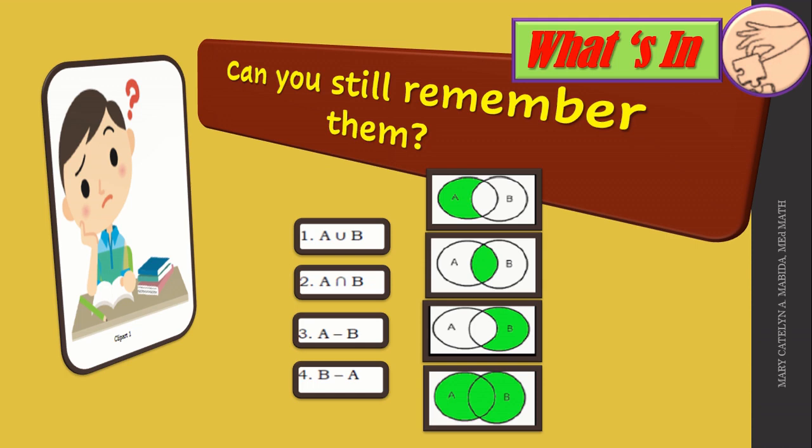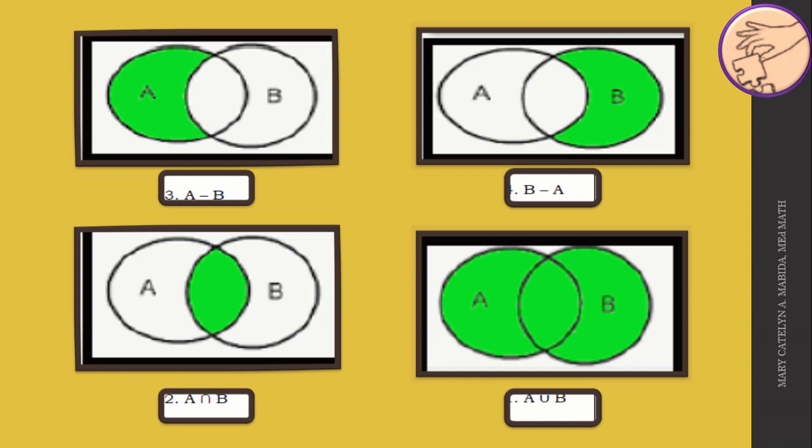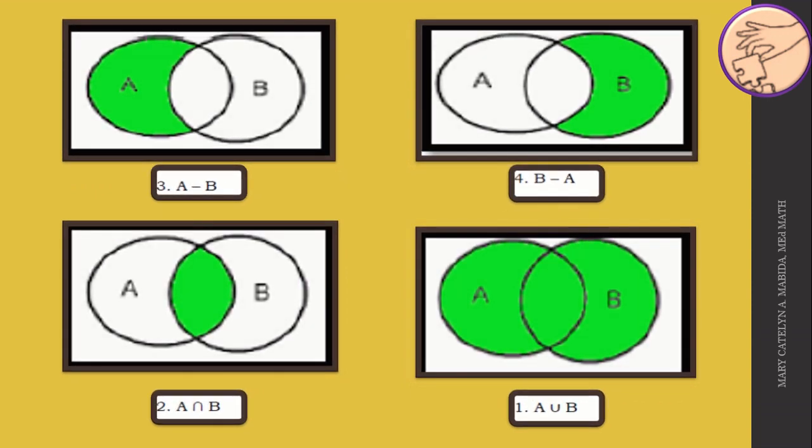Now let's see if you have the same answer as mine. Great job! I know that you still remember our previous lesson. Our first illustration is A minus B. Our second illustration is the intersection of A and B. Our third illustration is B minus A. And our fourth illustration is the union of A and B. Very good!